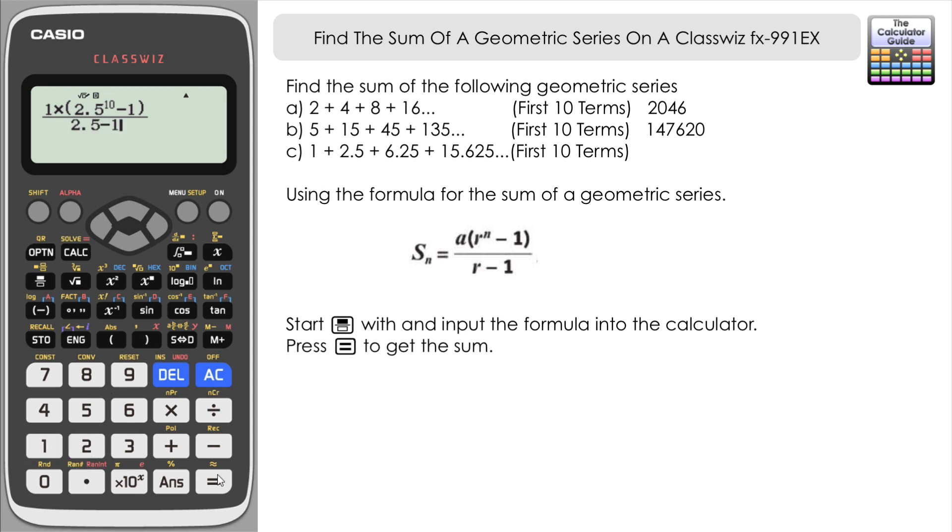Once we've inputted that press equals. And here we have our sum. Slightly more complex answer than the previous two. 6357.1621109.